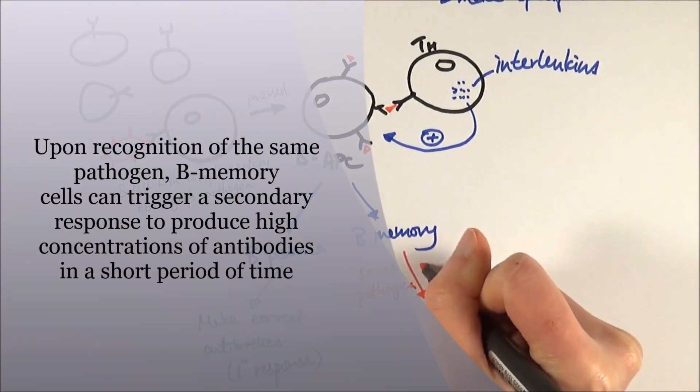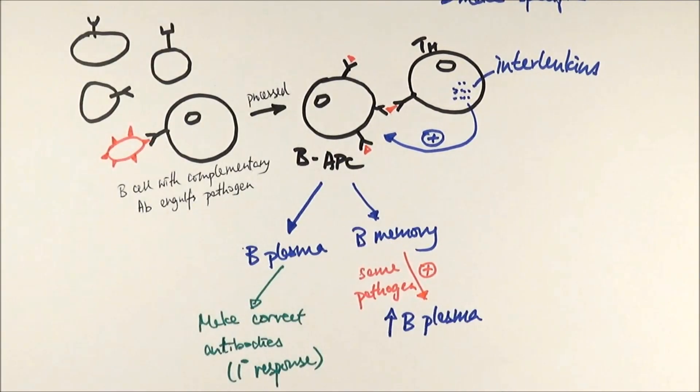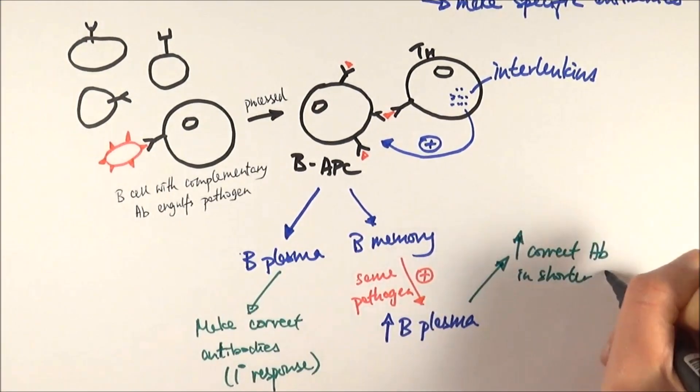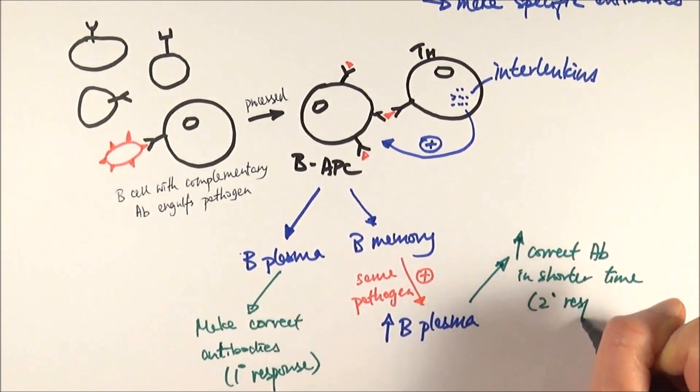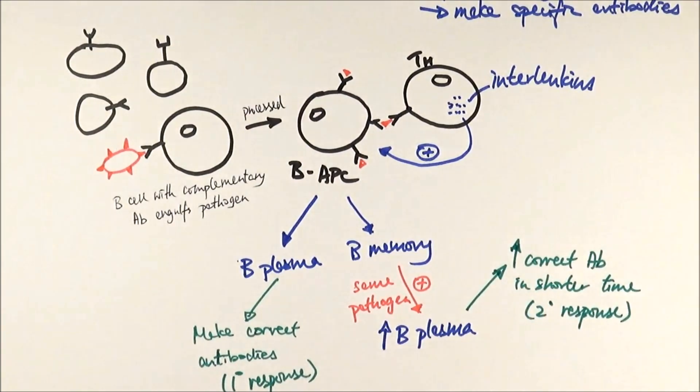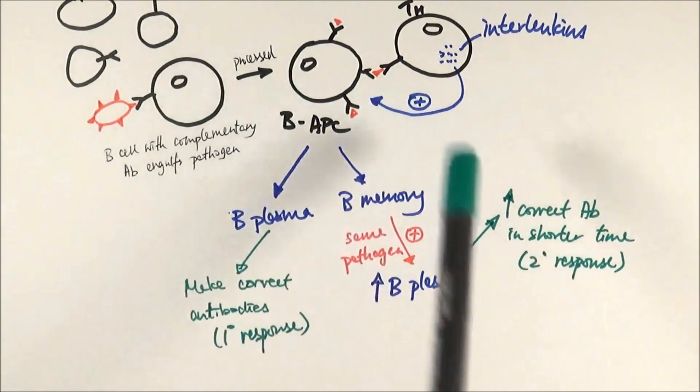It will become activated like that and it will proliferate into B plasma cells. So pretty much the same thing. And then they make lots and lots of the specific antibody in a much shorter amount of time. This is what we call the secondary response. And this is going to be a lot more prominent in terms of our studies later on when we talk about vaccines, because vaccination relies on this particular immune response.